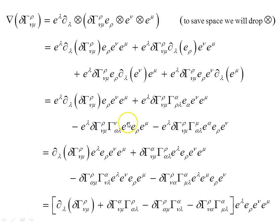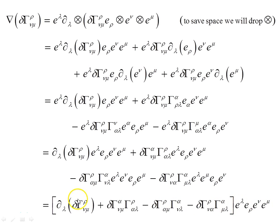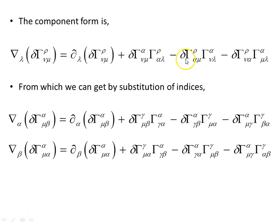After the index swaps, we have e_λ, e_μ, e_ρ, e_μ consistently across all terms, and we can factorize out the basis vectors. The result in the square brackets is the covariant derivative in component form. Substituting lambda → α and ρ → α gives us the component form needed going forward.